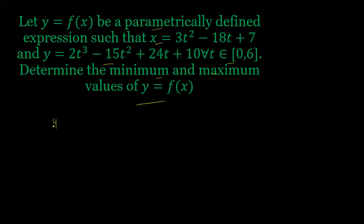If we look at y, we have been given y = 2t³ - 15t² + 24t + 10. If I take y dash (dy/dt), then it will be 6t² - 30t + 24.